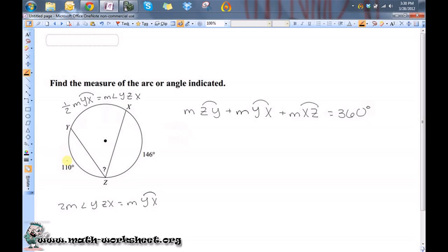Okay, well, let's go ahead and substitute in what we know. So, the measure of arc ZY is 110. And I'm trying to find the measure of this angle here. And I don't know what it is, nor do I know the measure of this arc. But I can still substitute something in here.